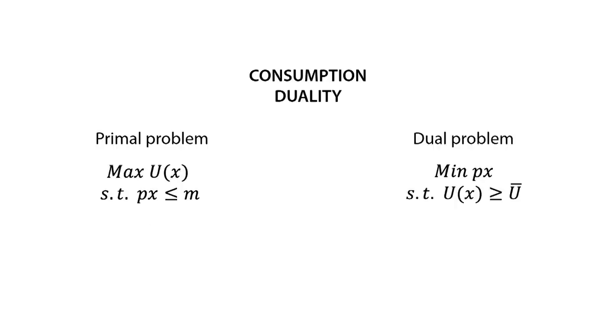On the other side, the dual problem is noted as the minimum price p of the amount of good x bought subject to the utility that derives from the good such that it fulfills the amount of utility we want to achieve from it, u bar.